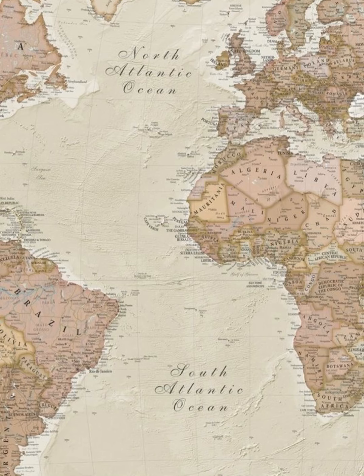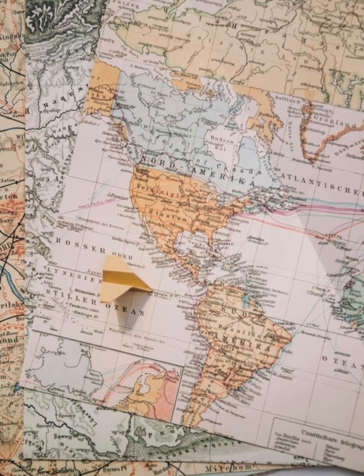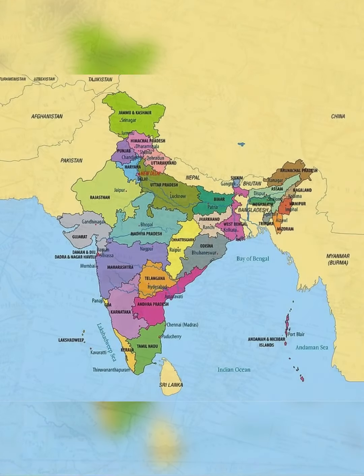Our next topic is map. A map is a drawing on paper outlining the details of a particular place — a state, country, or city. With the help of maps we can easily locate places and know where we are. For example, this is a map of India. In the North comes Jammu & Kashmir, Delhi, and Himachal Pradesh.